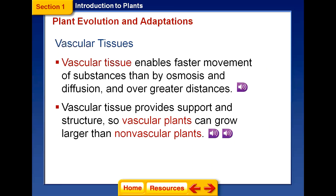Having vascular tissues is another feature plants developed. Just like our blood vessels enable us to transport nutrients, water, and waste all over the body, plants developed vascular tissues that enable faster movement of substances than osmosis and diffusion — processes of transporting materials from high to low concentration areas. Two kinds of vascular tissues are xylem and phloem. Xylem transports water and minerals from the roots throughout the plant.